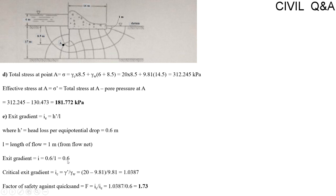The critical exit gradient equals submerged unit weight divided by unit weight of water. Submerged unit weight equals saturated unit weight minus unit weight of water. The factor of safety against quicksand equals critical exit gradient divided by exit gradient, which gives the factor of safety against quicksand conditions.